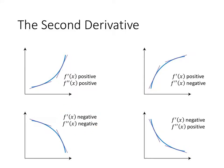Here, f prime is negative, which means my function is decreasing — it's going down as I go from left to right. And my second derivative is also negative, which means my slope is going down. So the slope is a negative number that's decreasing, meaning it's getting further away from zero, and my lines are getting steeper and steeper as I go from left to right.